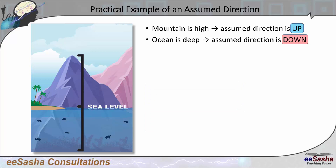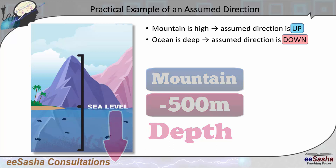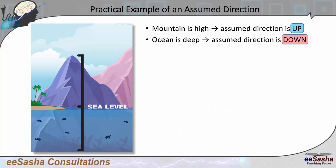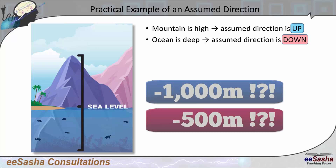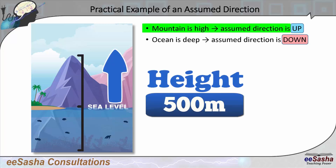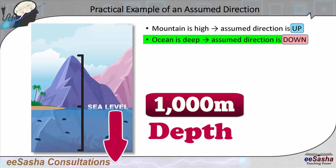I can easily say the mountain is minus 500 meters deep, or the ocean is minus 1000 meters high. But you wouldn't say something like that, especially not to an ordinary person, because they would think you're talking gibberish. Even though it's correct, you wouldn't say it that way. When you talk about a mountain, you always say a positive value, assuming that a mountain is high — not deep. And when you talk about the ocean, you assume the direction is down, so it's deep, not high — that's why you get positive values.